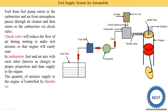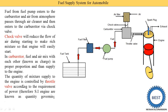The quantity of the mixture supplied to the engine is controlled by the throttle valve according to the power requirement. Therefore SI engines are known as quantity governing engines, because they only control the quantity. The quality of the charge is already maintained by the carburetor and is not changed. Only the amount of charge supplied is controlled by the throttle valve — that is why it is known as quantity governing.